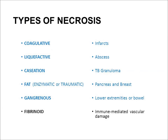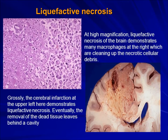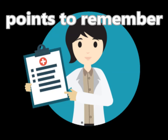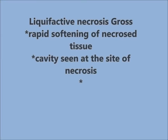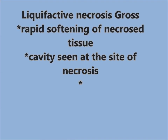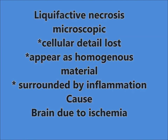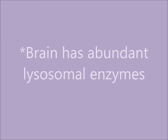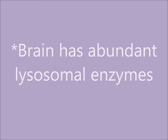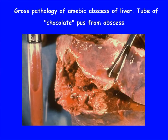In the brain, ischemia causes liquefactive necrosis rather than coagulation — it leads to softening of brain tissue, leaving behind a cavity. This occurs because neurons contain hydrolytic enzymes that cause softening. The result is a cavity at the site of necrosis filled with lost homogeneous cellular material surrounded by inflammation. The brain has prominent lysosomal enzymes.